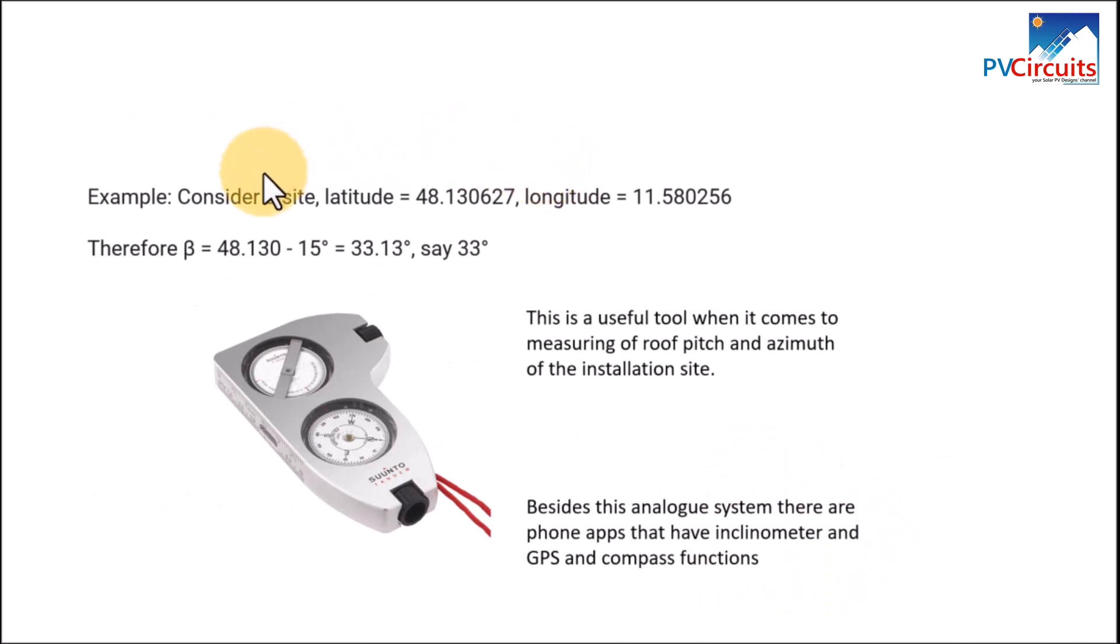So if we consider a site with these coordinates, the latitude 48.130627 and longitude of 11.580256, to get our tilt angle we'll apply the equation and get that the inclination or the tilt angle for that module will be 33 degrees.